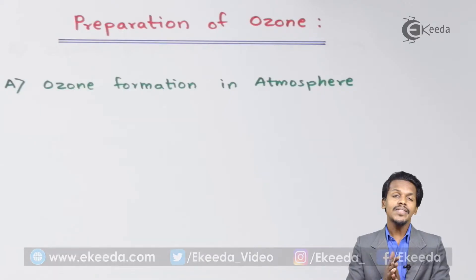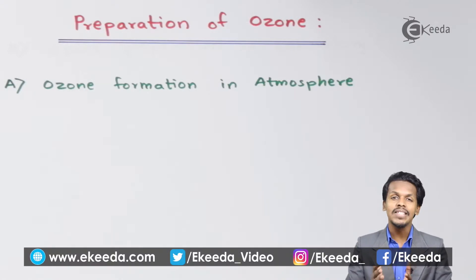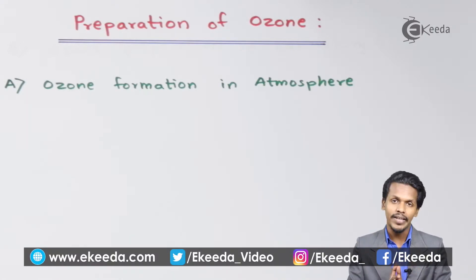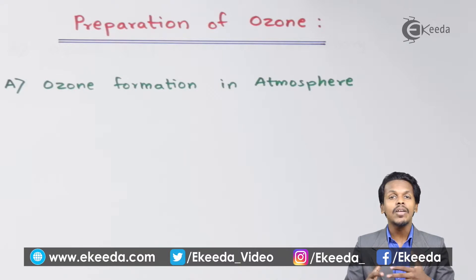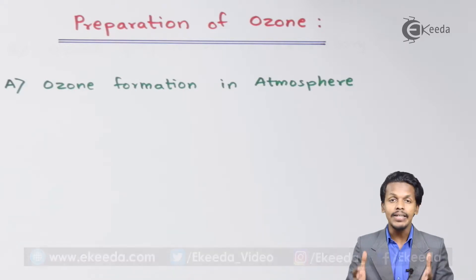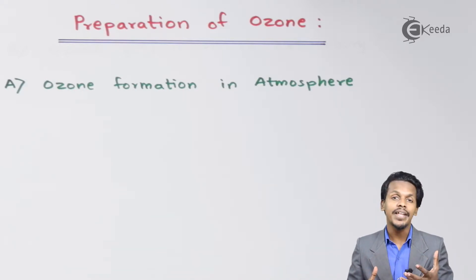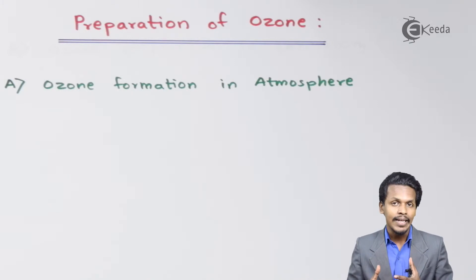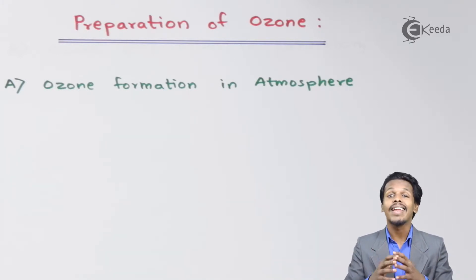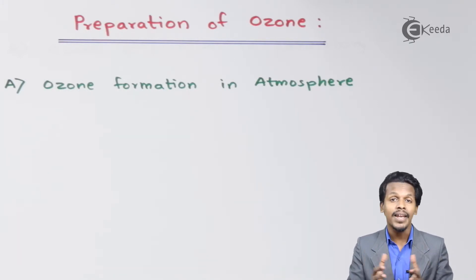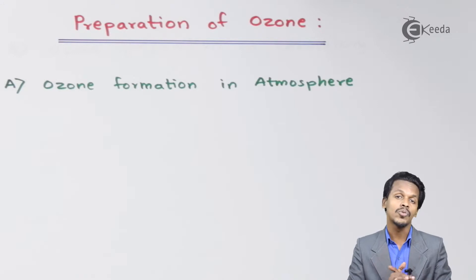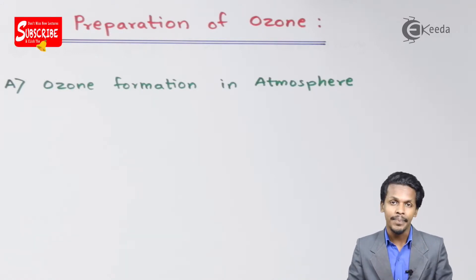When we hear about ozone, the first thing that comes to mind is the ozonosphere. Basically, ozone protects the earth from the harmful UV radiation coming from the sun. That's the reason it acts like an ozone layer, also known as the ozone umbrella.